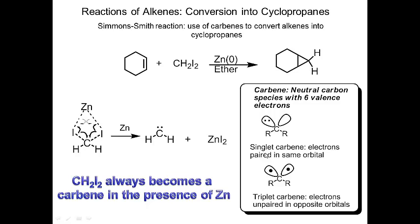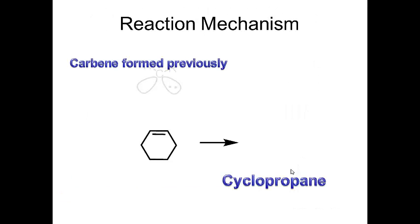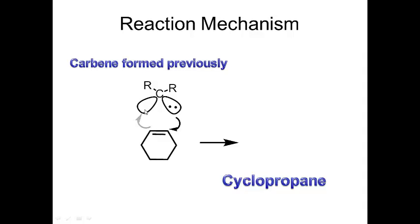A carbene can exist in two forms: a singlet carbene, where both electrons are in one p orbital, or a triplet carbene, where you have one electron in each p orbital. In the mechanism, the pair of electrons from the carbene comes in while the double bond attacks the empty orbital on the carbene, forming a bond between this carbon and this carbon and the carbene carbon. The product is a cyclopropane.